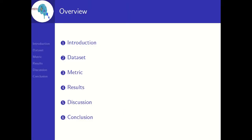The overview of the talk: this paper investigates whether phonological categories exist in imagined speech. In the introduction, we will see what imagined speech is and the two phonological categories considered in this study. Our experiments are done on a publicly available dataset, and we will discuss mean phase coherence as the metric for measuring neural activity, followed by results and possible explanations. Let's begin.